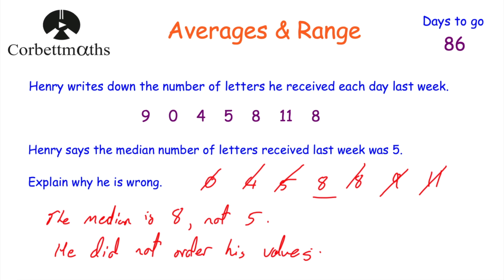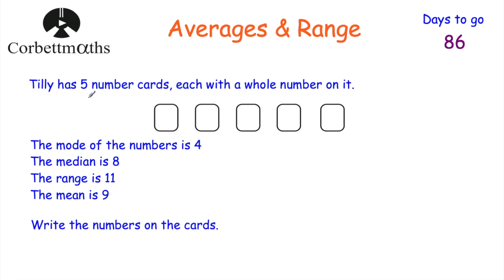Let's have a look at our next question. It says Elisa has got five number cards, each with a whole number on it. The mode of the numbers is four, the median is eight, the range is 11, and the mean is nine. We need to write down the numbers on the cards. Feel free to pause the video now and give this question a try yourself.